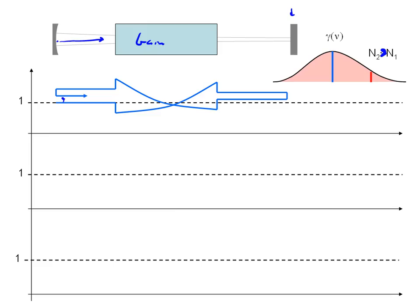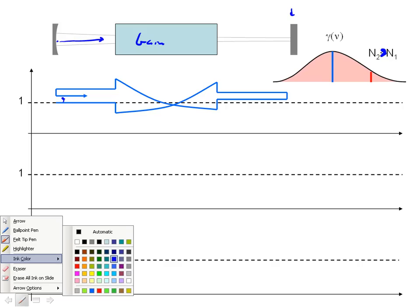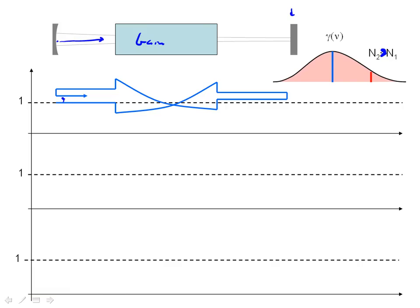Now let's take a look at a case where we are not at the peak of the gain curve. We're off the gain curve, so our gain's not quite as high. We wouldn't expect to have the same amount of amplification. Let's take a look at what that looks like.